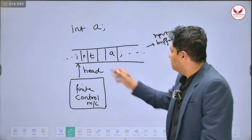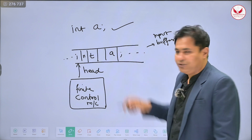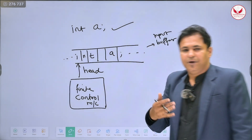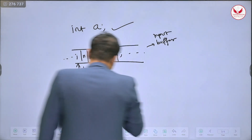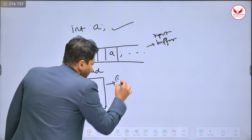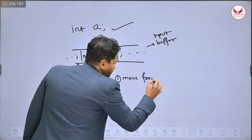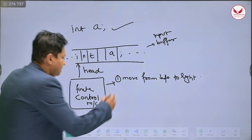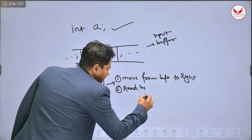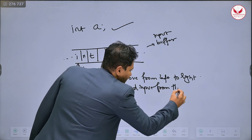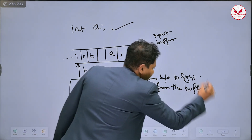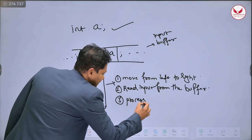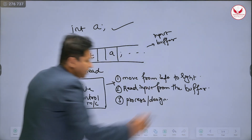The input is passed in the form of an instruction to a finite control machine. That instruction is read by the finite control machine. The finite control machine moves from left to right, reads the input from the buffer, and processes or designs the automata.